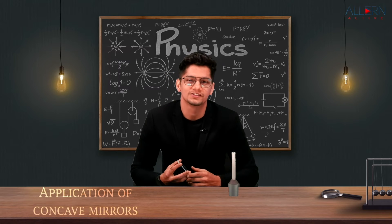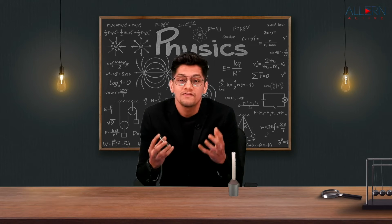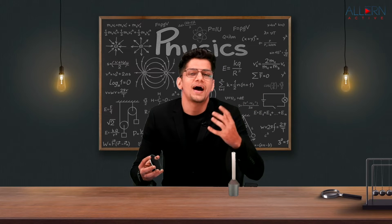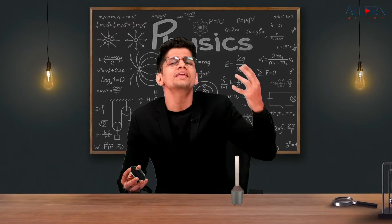We know that whenever we have rays of light coming from infinity, they come parallel to each other. Similarly, if we go outside and see the rays of light coming from the Sun, when they fall on this concave mirror, you can see that the rays of light are getting converged and focused at one point.